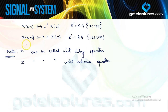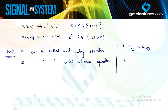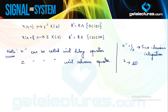From these two cases we can say that z^{−1} is the unit delay operator, because multiplying the Z-transform by z^{−1} produces a delay of one unit in the time domain. And z is the unit advance operator, because multiplication by z advances the signal by one unit in time. Note this is different from Laplace domain: in Laplace domain, 1/s corresponds to time-domain integration and s to differentiation.